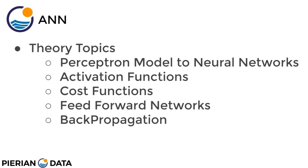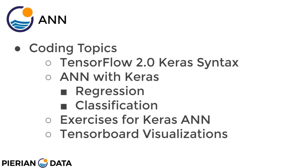Once we have a solid understanding of these fundamental ideas behind neural networks we'll be able to move on to the coding topics. We'll begin by talking about the Keras syntax API, which is the main API now for TensorFlow 2.0 or 2.x. Once we understand that Keras syntax, we'll show you how to build artificial neural networks with Keras for different types of supervised learning tasks such as regression and classification. We'll first start off with some basic data sets and then move on to more realistic data sets. A big part of these lectures is actually going to be exploratory data analysis as well as feature engineering.